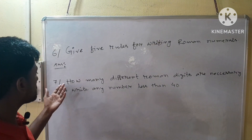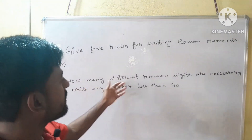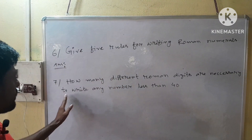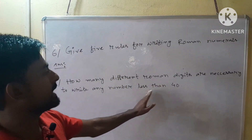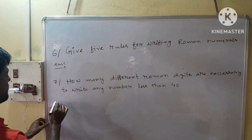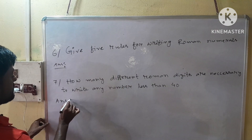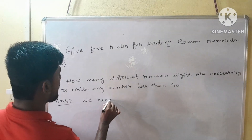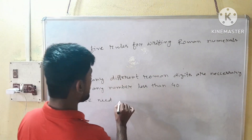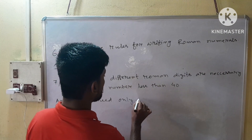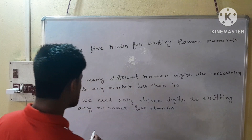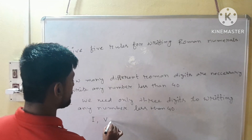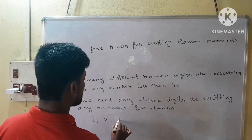Next question is question number 7: how many different Roman digits are necessary to write any number less than 40? Here our answer will be: we need only 3 digits — those digits are 1, 5, and 10.